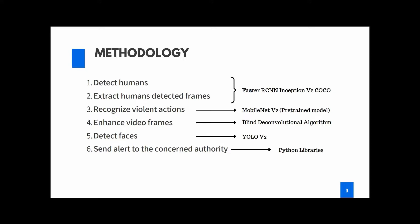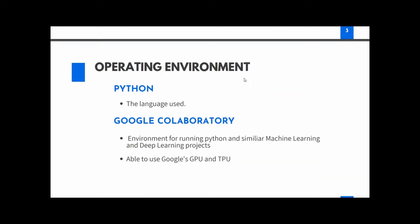Detecting faces is important because we need to find out who was involved in the particular violent action. That is the fifth step. The sixth and final step is sending an alert to the concerned authorities. We'll achieve this using Python libraries like WhatKit, a WhatsApp library for Python, which allows us to send WhatsApp messages directly to the corresponding authorities, including the location, time, enhanced video frames, and detected faces — all in one message.